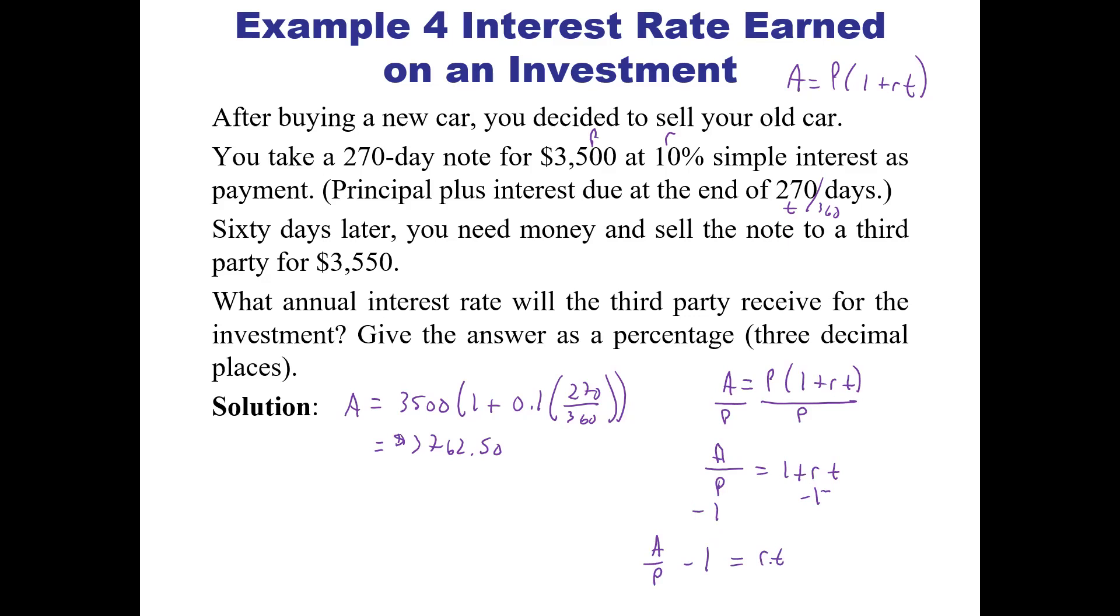Now we want to solve for our rate. So if we take this times 1 over T, we take this times 1 over T, that should give us our rate. So then our rate will be equal to 1 over T times A over P minus 1.